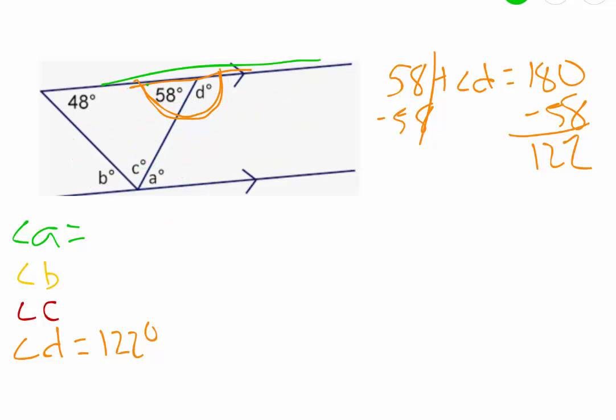And one of the rules says the alternate interior angles are the same. So if this angle here is 58, if we go opposite over here to angle A, this must also be 58 degrees because they're on opposite sides, and they're on the inside here, alternate interior angles.